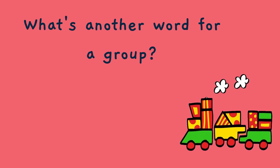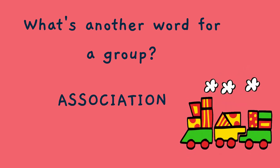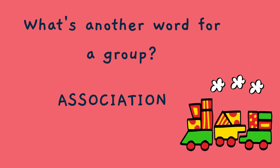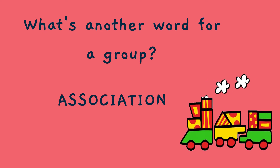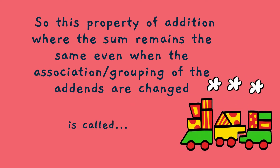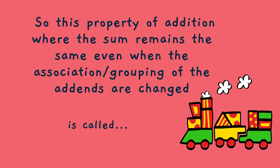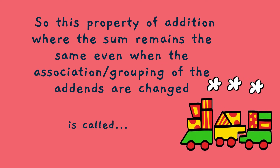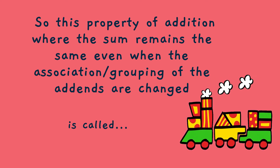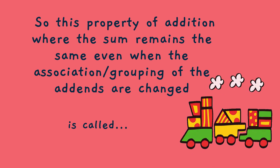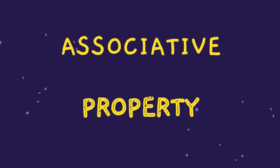What's another word for a group? Exactly — Association! So this property of addition where the sum remains the same, even when the association or grouping of the addends are changed, is called the Associative Property!